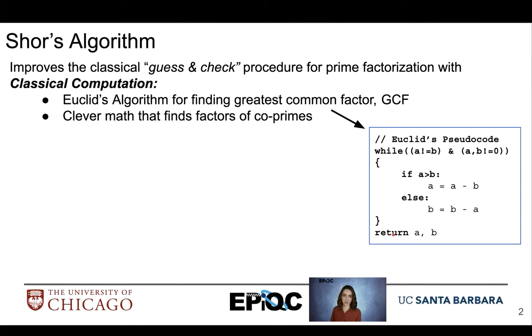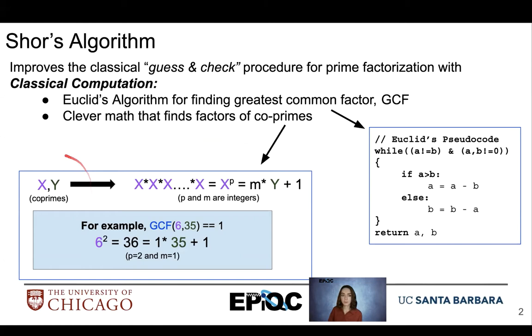For the clever math that helps us find factors of coprimes, we take two coprime values, so here we'll use x and y, and we raise x to some value p that allows us to find a multiple of y plus 1.